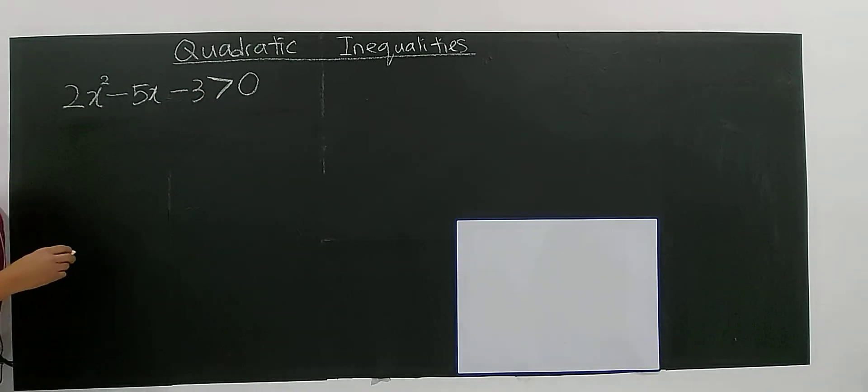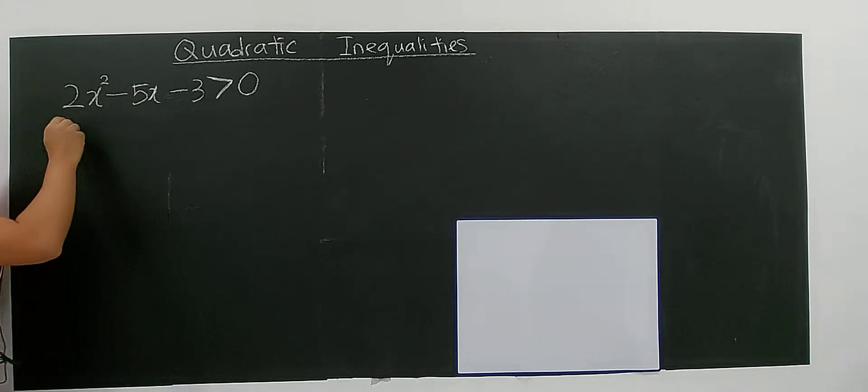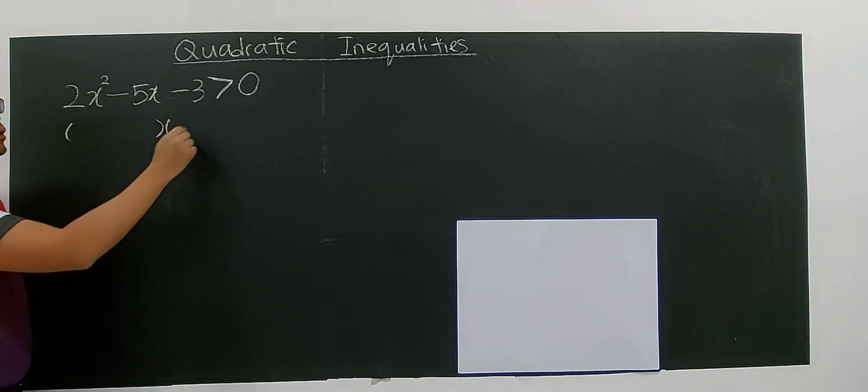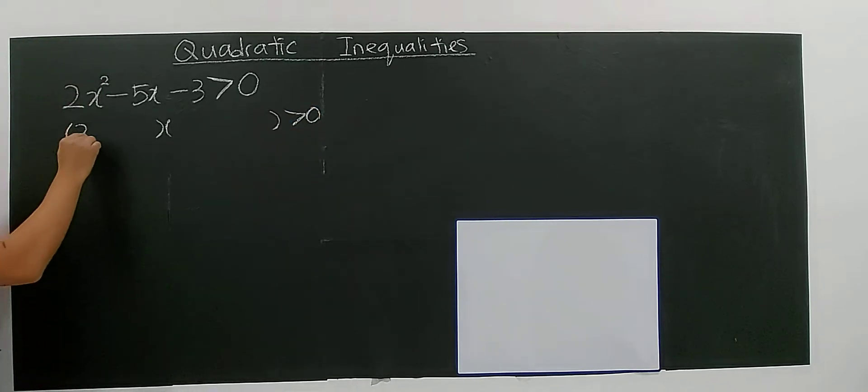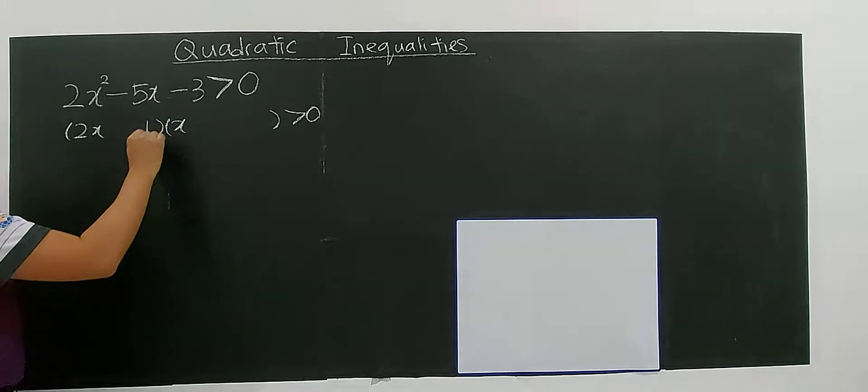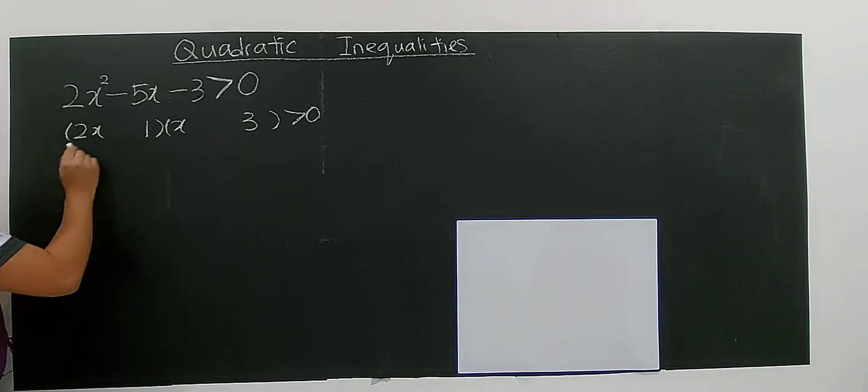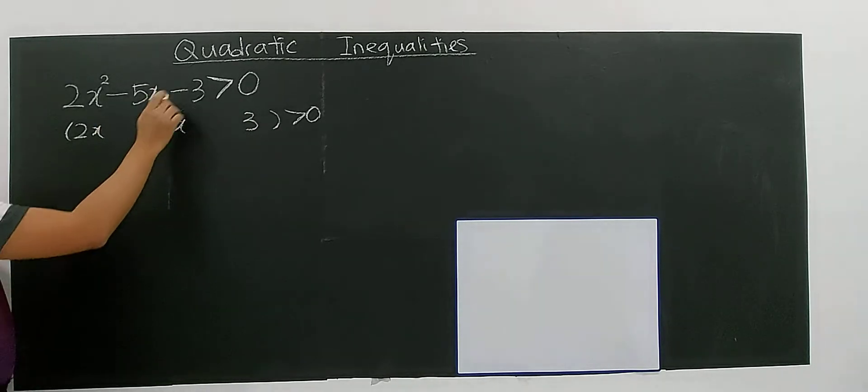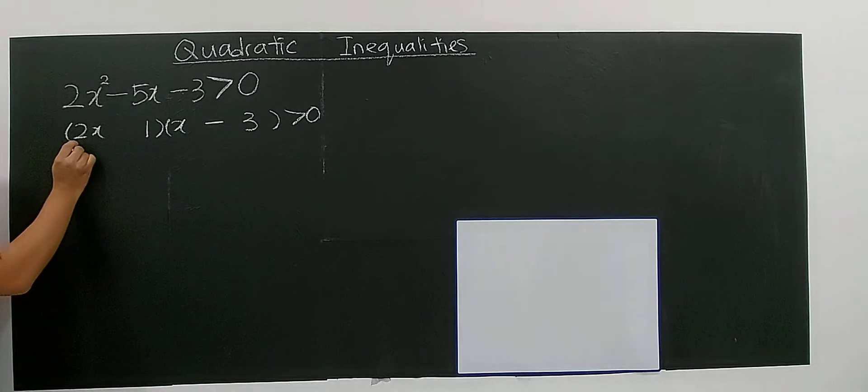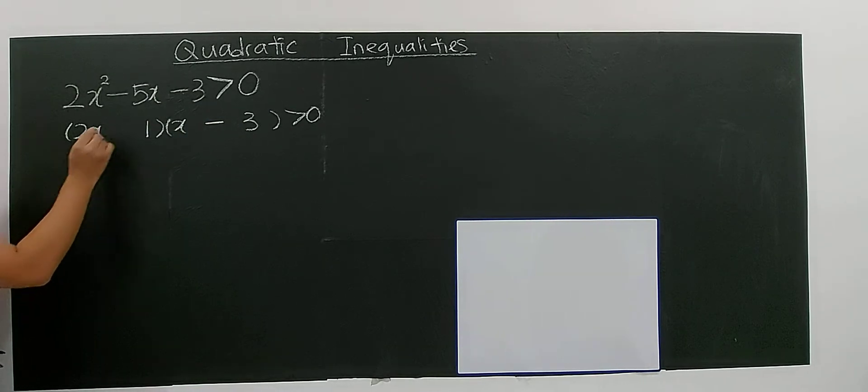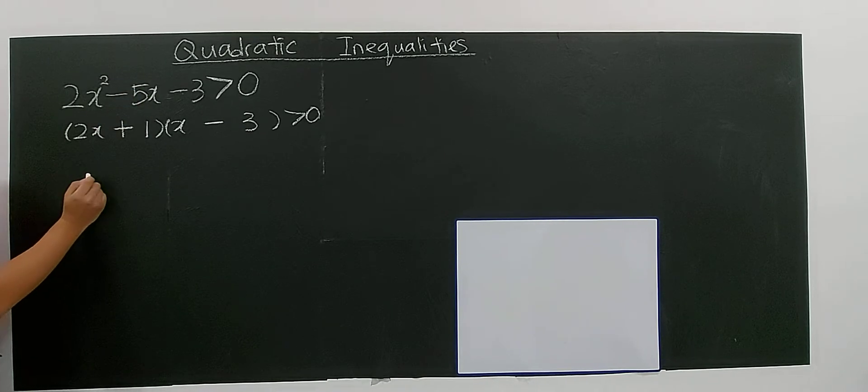So if it is the case, you try to factorize it. So factorized, you have 2x and x. 3, you have 1, 3, 3, 2, 6, and 1 can form 5 negative. So you put negative because negative 3 times 2 is negative 6, plus with 1 you have negative 5.